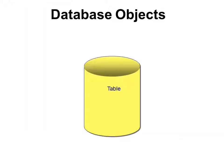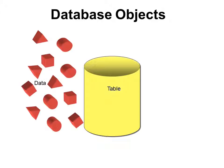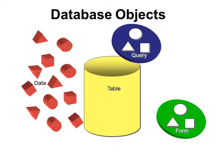Database objects are like a bunch of toys in a child's toy box. The first one we're going to look at is the table. It's like that yellow bucket that kids like to put all those blocks into. I want you to think of the table as the bucket and the data as the blocks. If I were to take all those blocks, put them in the bucket, swirl it around, and dump it out, what would I have? A big mess.